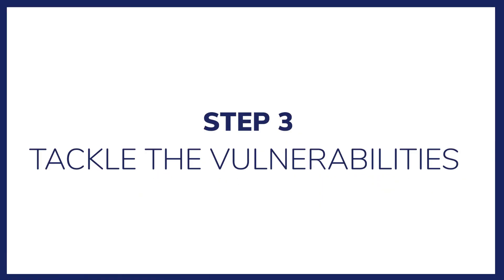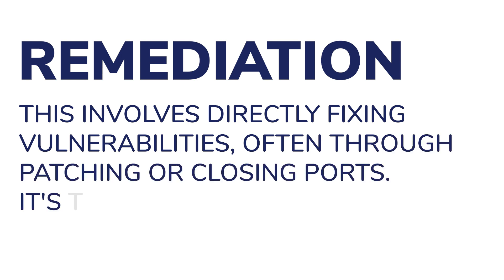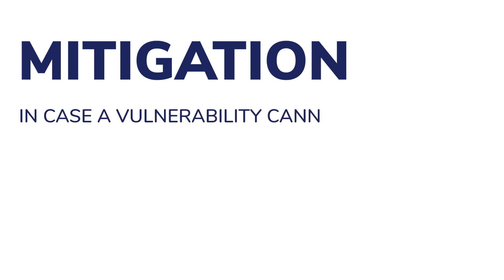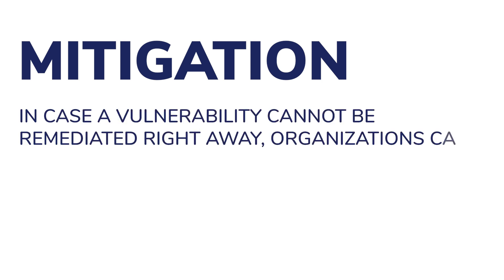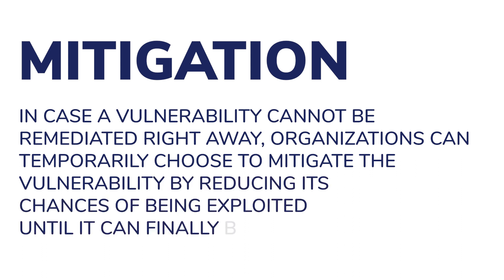Following evaluation and prioritization, it's vital to address vulnerabilities considering risk and business context. Typically, there are two approaches. Remediation involves directly fixing vulnerabilities, often through patching or closing ports, and is the preferred method for most organizations. Mitigation is used when a vulnerability cannot be remediated right away — organizations can temporarily reduce its chances of being exploited until it can be fully fixed.